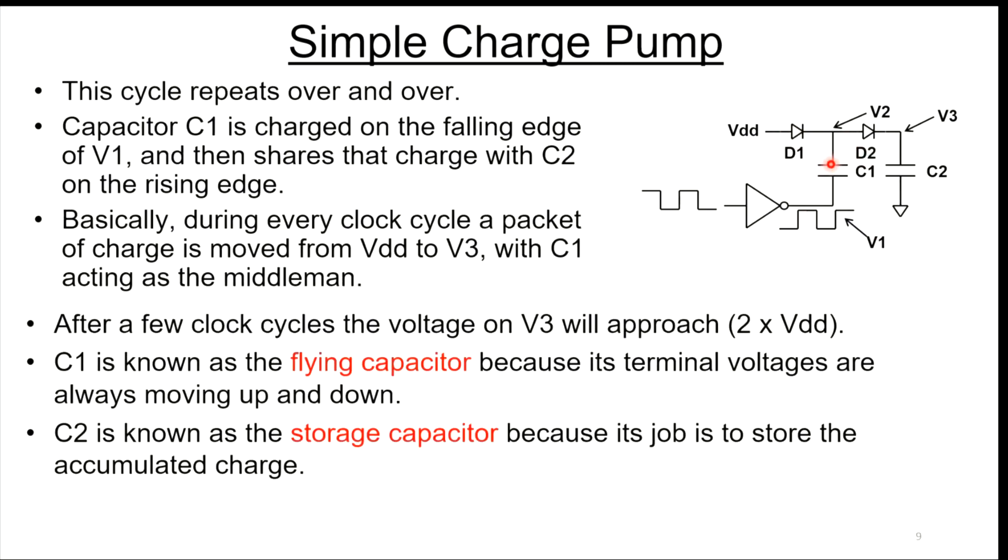The capacitor C1 gets charged on the falling edge of V1, and then it shares that charge with C2 on the rising edge of V1. Basically, during every clock cycle, a little packet of charge is moved from VDD onto capacitor C1 and then moved from capacitor C1 onto capacitor C2.